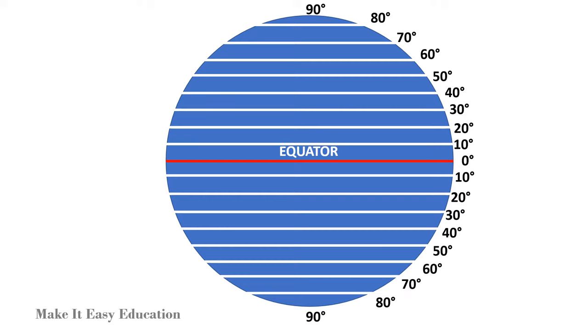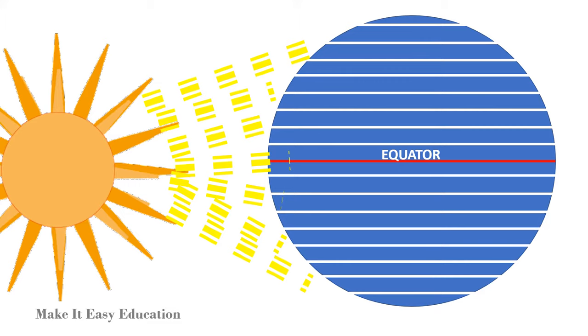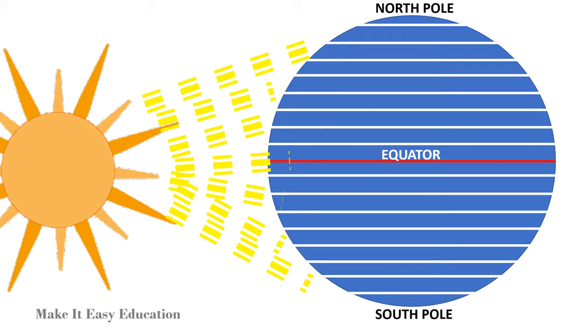Latitude classifies temperature zones, because at the equator the temperature is very hot due to the sun's heat, and as it goes to the north and south poles, the temperature reduces and becomes very cold.